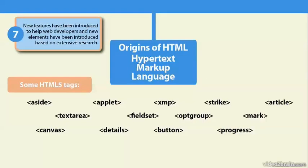New features have been introduced to help web developers, and new elements have been introduced based on extensive research — including tips from people who are developing and finding things that aren't appearing properly in browsers — so new tags are developed all the time. Here are some examples of tags supported in HTML5. Some of them are new, such as the aside tag and the canvas tag, and some have been around for a while and have just been refined. That's a little bit of background on working with HTML, and as we progress, we'll learn more about what tags are used specifically with HTML5.